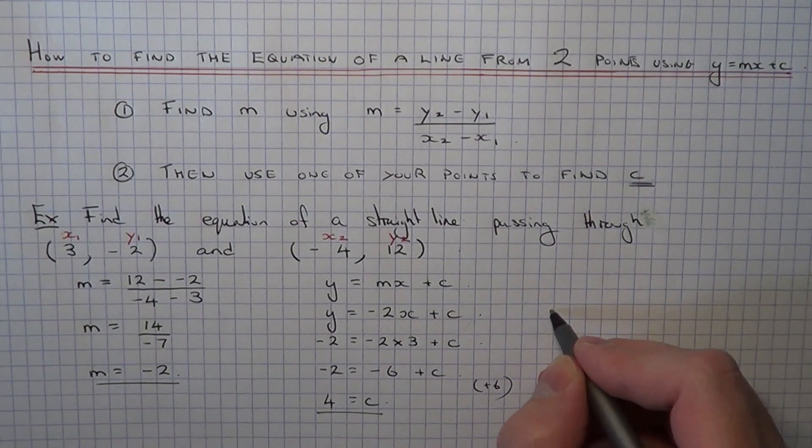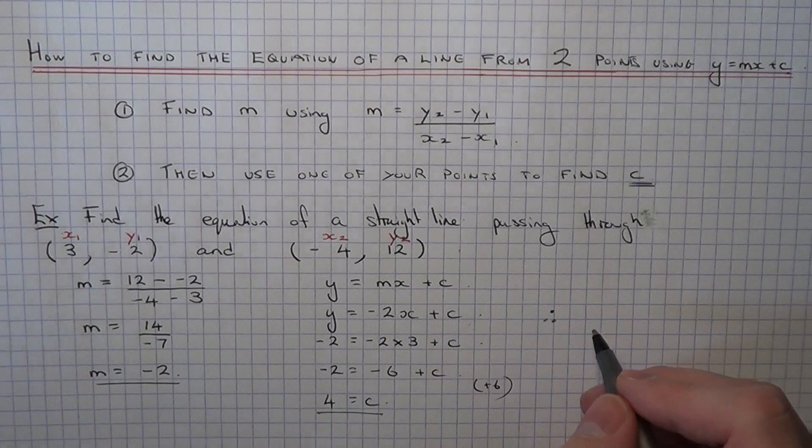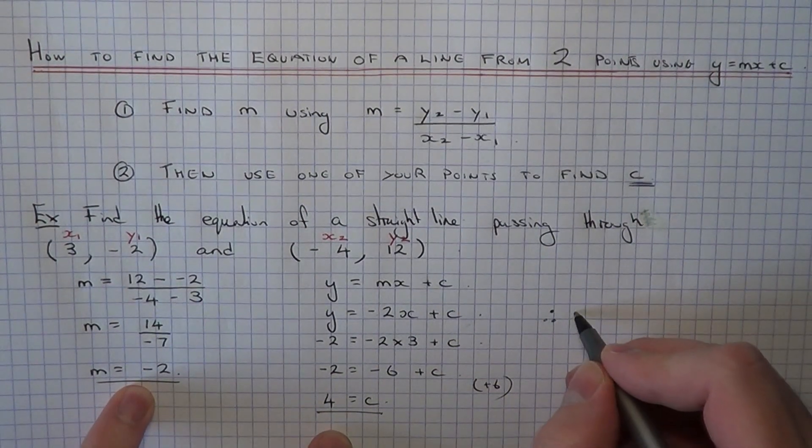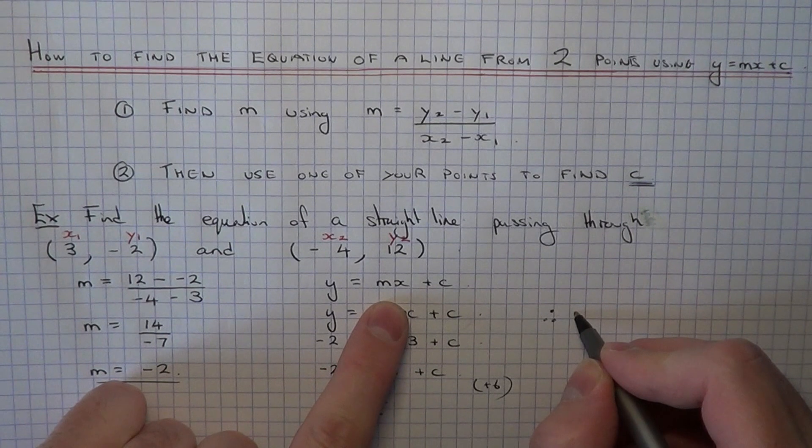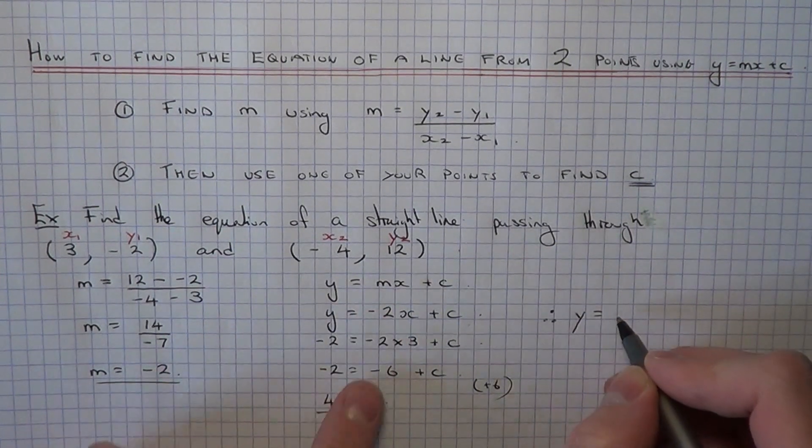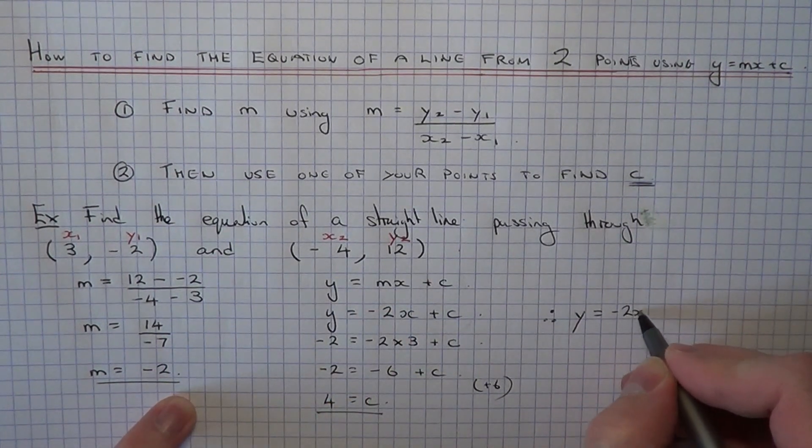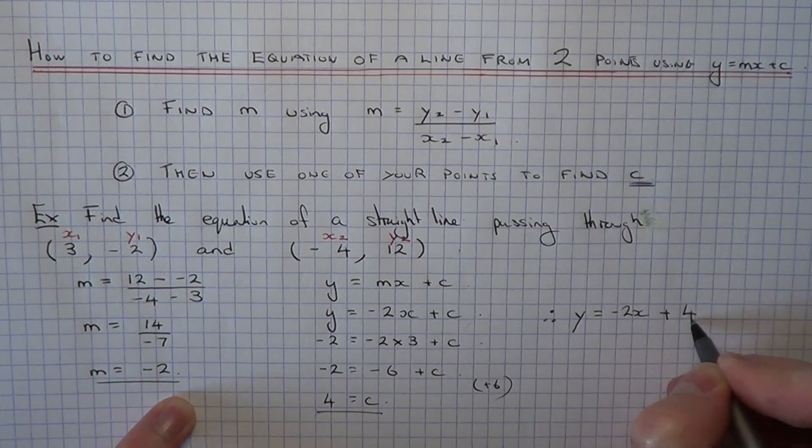So therefore, we've now got the gradient, we've now got the intercept. So if we copy the equation down again, it will be y equals minus 2x plus 4.